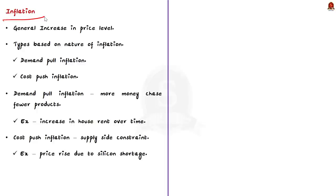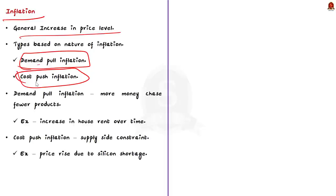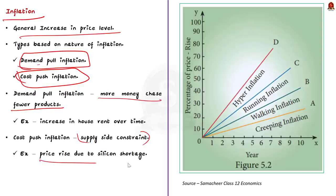Inflation is nothing but a general increase in price levels. Inflation is classified into two types: demand-pull inflation and cost-push inflation. Demand-pull inflation occurs when money supply in the economy increases — simply put, when more money chases fewer products. An increase in house rent due to increase in disposable income of the population is an example of demand-pull inflation. Cost-push inflation is due to supply-side constraints — for example, recently the prices of graphic cards and processors increased due to silicon shortage. In addition, inflation can also be classified into creeping inflation, walking inflation, running inflation, and hyperinflation based on the rate of inflation.